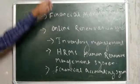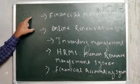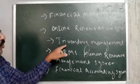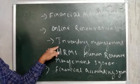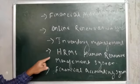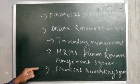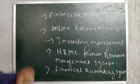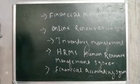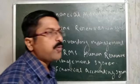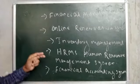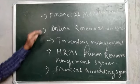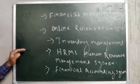So the types of specific purpose application software are: Inventory Management System, Human Resource Management System, Financial Accounting System, Financial Management System, and Online Reservation System. These are the various types of specific purpose application software generally used on a need basis — that means these are used for various special types of jobs.